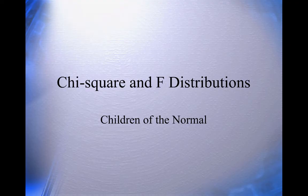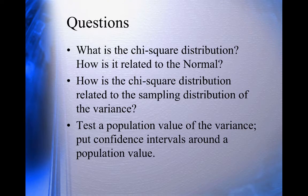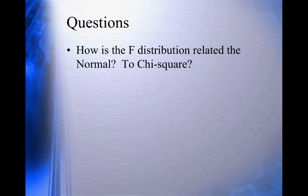In this module, I'm going to talk about chi-square and F distributions — the children of the normal. When we're done, you should be able to answer these questions: What is the chi-square distribution? How is it related to the normal? How is the chi-square distribution related to the sampling distribution of the variance? You should be able to test a population value of the variance, put a confidence interval around an estimated population value, and for the F distribution, say how it's related to the normal and to chi-square, and use it to test a hypothesis about equality of variance in two populations.